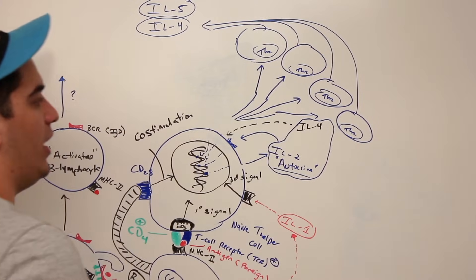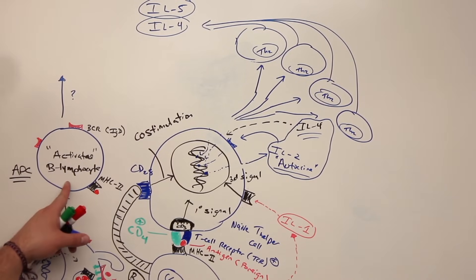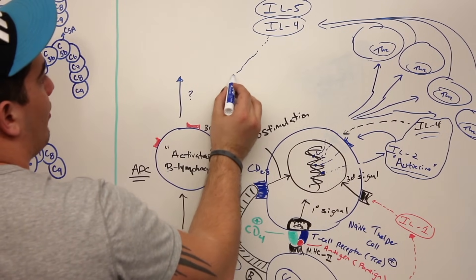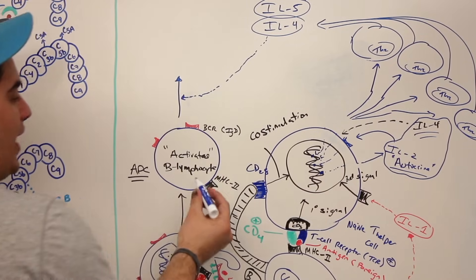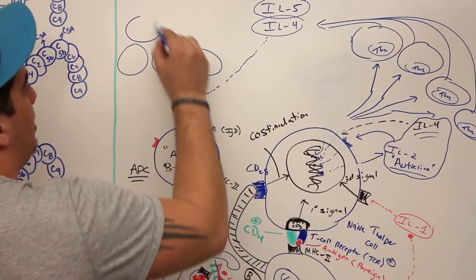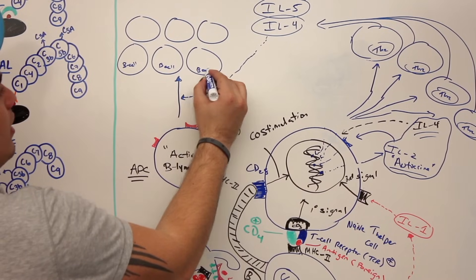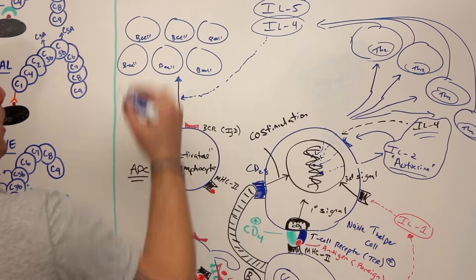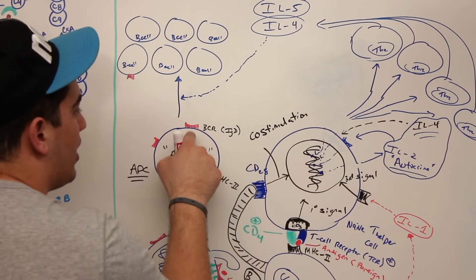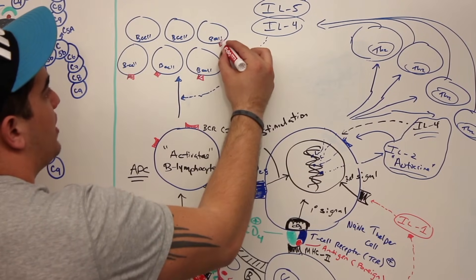So now what happens with interleukin-4 and interleukin-5? Remember this activated B lymphocyte that couldn't proliferate yet? Now we can proliferate it. Interleukin-4 comes over and activates the B lymphocyte to start turning on genes to start proliferating. We start making tons of B cells — activated B cells, no longer naive. These B cells have BCRs (IgD antibodies) specific to that foreign antigen, and also MHC2 molecules with the foreign antigen exposed.